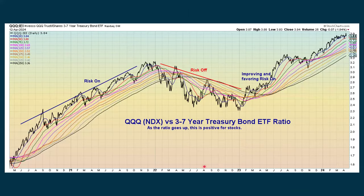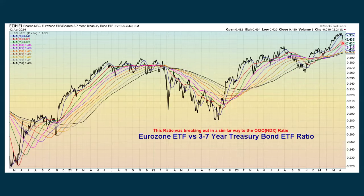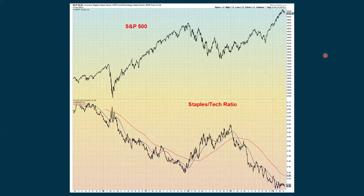We look at the QQQs and compare with three to seven-year bonds — this is still looking good, meaning the NASDAQ 100 is outperforming three to seven-year bonds based on price. We also compare that three to seven-year bond with the Eurozone, where it's falling back a little bit, but still maintaining more of an uptrend. Then we look at a ratio between staples and tech. Staples by themselves are in an uptrend, but when you compare them with tech, they are really underperforming.